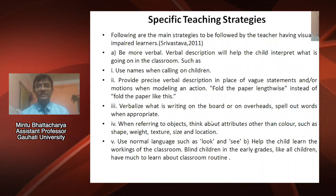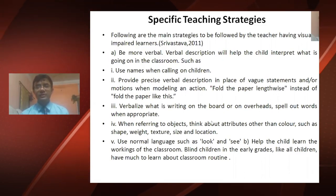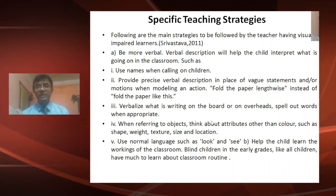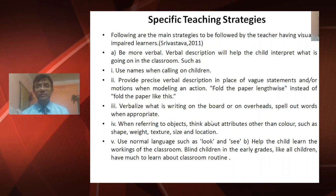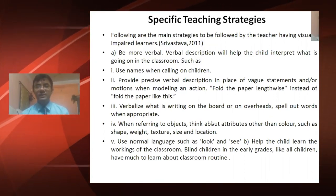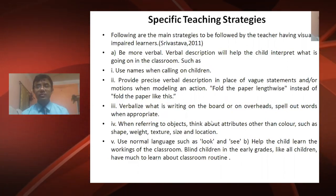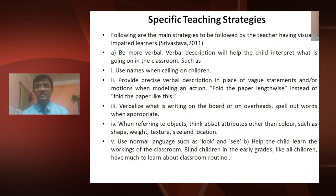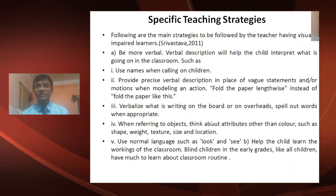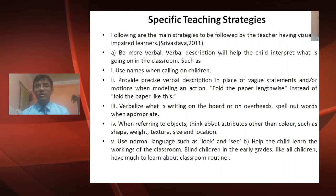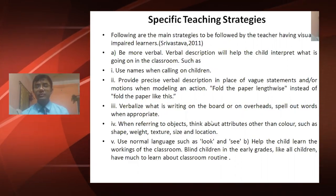Dear students, we will be discussing various specific teaching strategies. The first point covers main strategies to be followed by teachers having visually impaired learners. The first strategy is verbal or bubble description, which will help the child interpret what is going on in the classroom. For example, use names when calling on children. Second, provide precise verbal description in place of vague statements or motions when modeling actions.